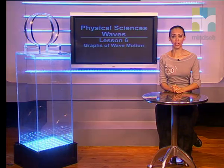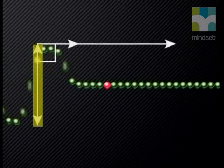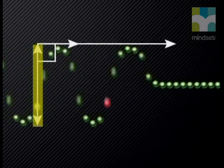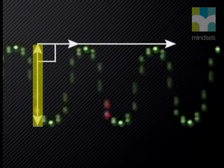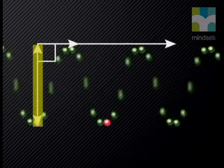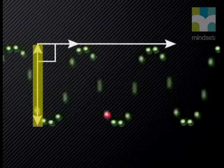Keke will show us the motion of a single particle in a wave. Focus on the pink particle and notice its movement. Remember that the motion of the particles in the medium in a transverse wave is at right angles to the motion of the wave itself. Each particle of the medium is displaced to a maximum height on the vertical axis, then moves down past its rest position to a maximum negative displacement, and then moves back up to the rest position to complete one cycle of movement.